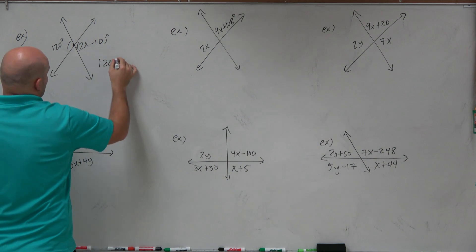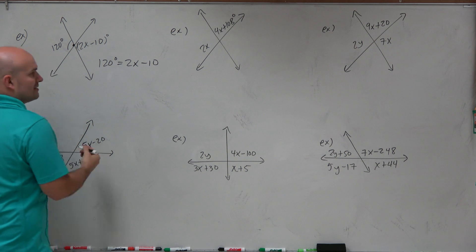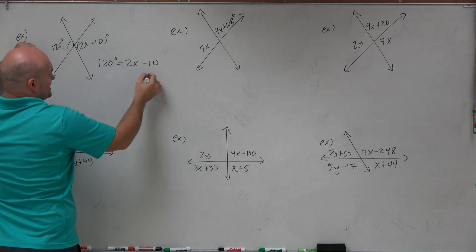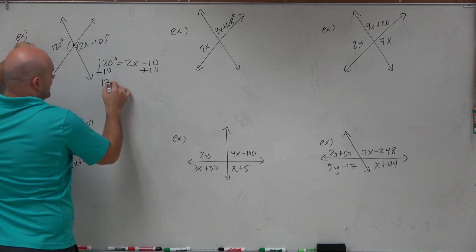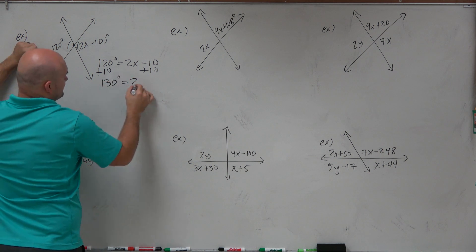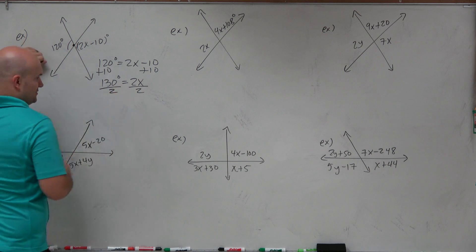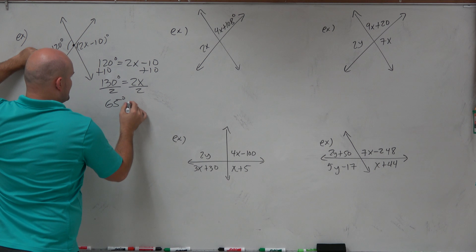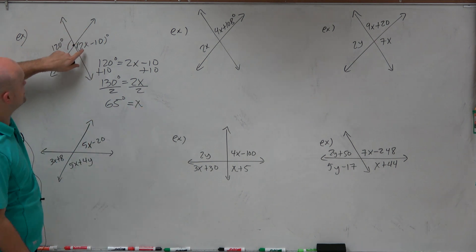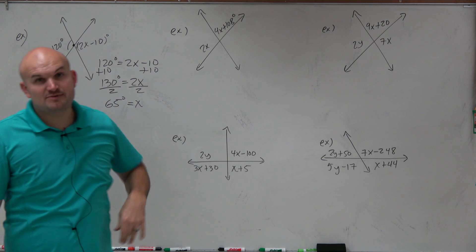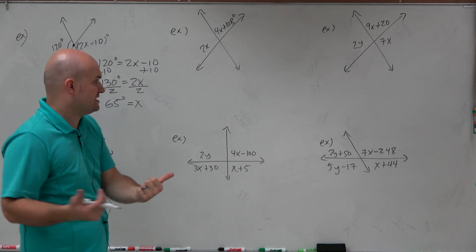I can say 120 degrees is equal to 2x minus 10. Then I'll add 10 to both sides and get 130 degrees equals 2x. Divide by 2, and therefore x equals 65 degrees. We can double-check: 2 times 65 is 130, minus 10 is 120. That checks out.